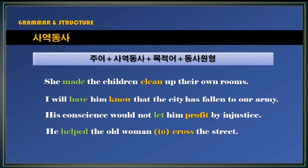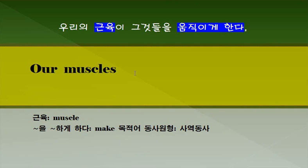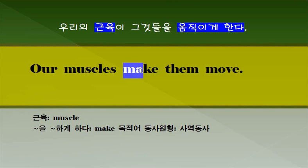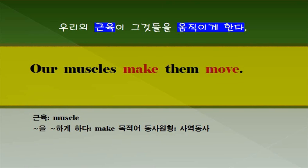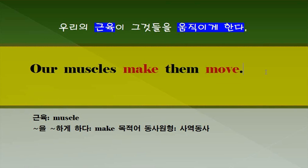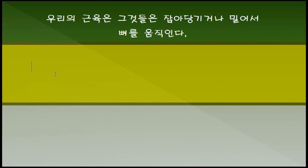목적보어로서 동사원형이 오게 됩니다. our muscles, make, 그것들을 them이 되겠죠. 움직이다, move입니다. 여러분들이 조심해야 될 것은 사역동사 make 다음에 동사원형이 온다는 것, 그것을 조심하시기 바랍니다. 이쪽 부분을 to move, 이런 식으로 문장을 구성해서는 안된다는 것, 다시 한번 주의해서 염두에 두시기 바랍니다. 세 번째 문장입니다.